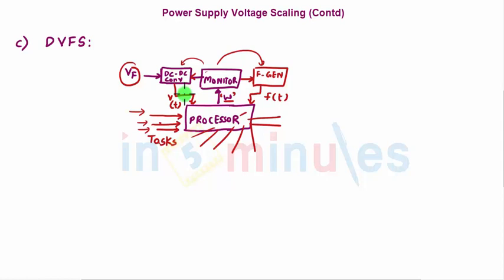When the workload is less, the system decreases the voltage, saving dynamic power. Similarly, the frequency is also scaled. Since dynamic power is proportional to VDD² × f, both frequency and voltage can be scaled down depending on the processor's workload. This is called dynamic voltage and frequency scaling — the word 'dynamic' because workload is checked at runtime, and both voltage and frequency are scaled — helping to reduce dynamic power dissipation.